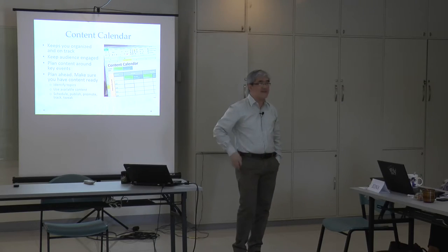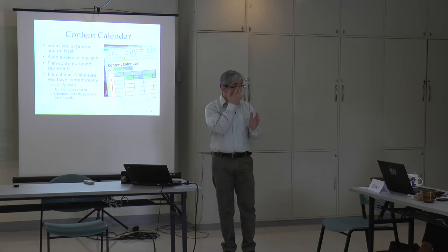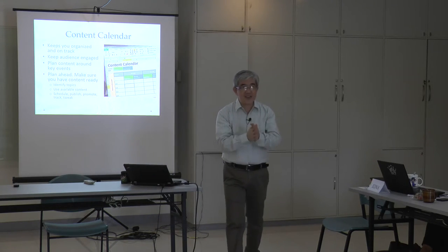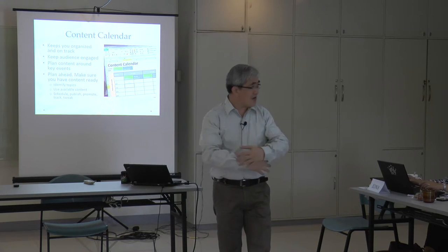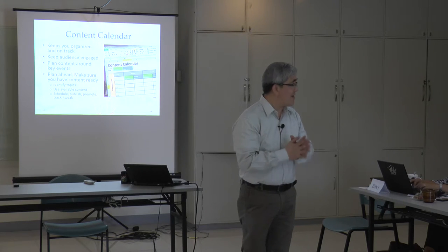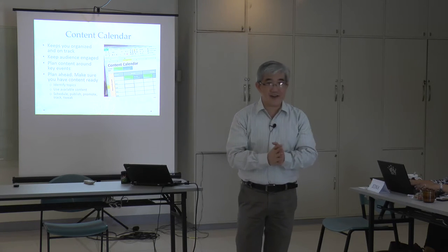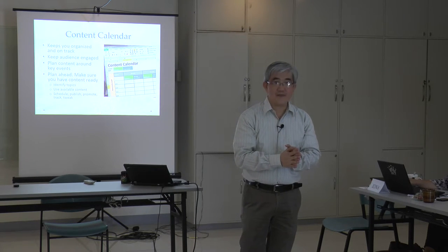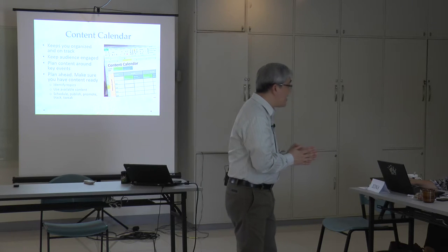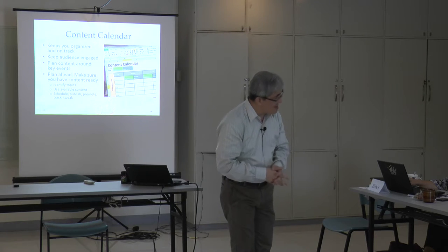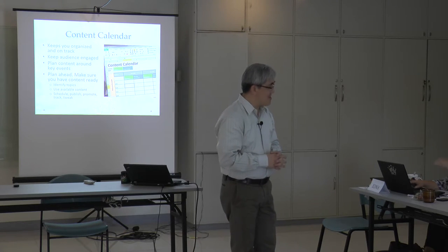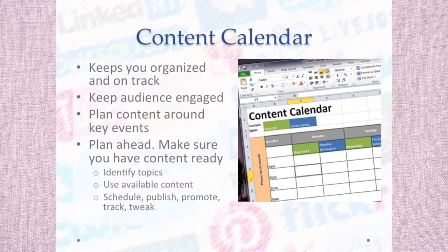Now let's talk about planning it out. When you start communicating to your community or committed followers, you have to have a content calendar. You have to plan in advance what you're going to say to your followers. You don't know all the details, but you have to have an idea of how you will tell the story over time.